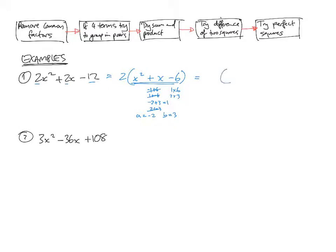So we factorize the quadratic in the brackets to be x take 2 and x plus 3. And we need to remember that we removed the common factor of 2 there. If we want to double check that that's correct.